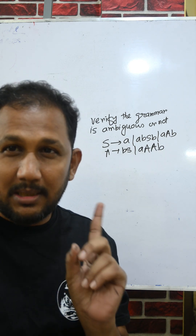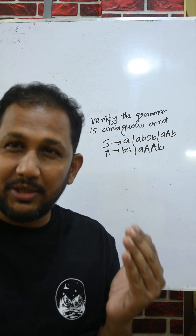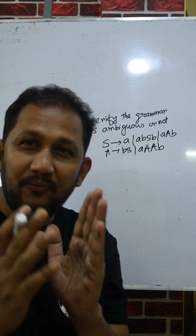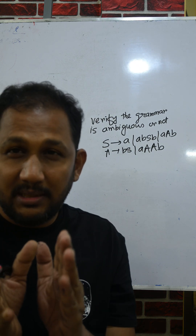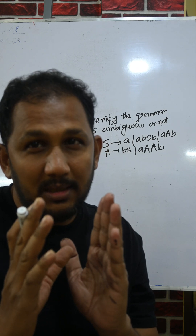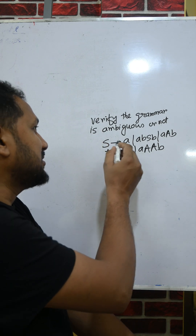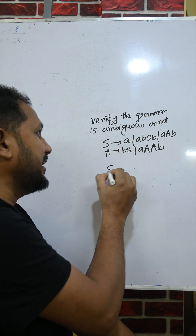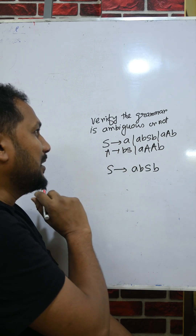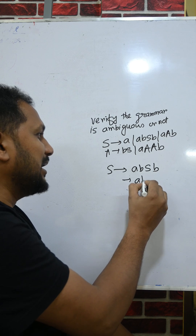We need to check if the grammar is ambiguous or not. We need to create a string that can be derived in different ways — that is, there are two different parse trees for the same string. Let us consider the production S → abS·b. From S → a, we get the string ab.